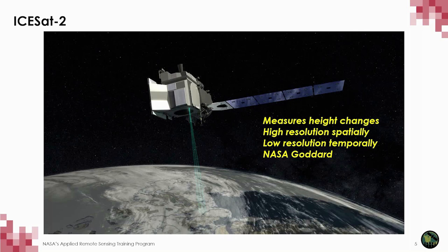ICESat-2 measures height changes, typical of all laser altimetry systems. It has high spatial resolution in the along-track direction but low temporal resolution — every 91 days over the poles it repeats its measurements, which are informative for seasonal changes over ice sheets. In the mid-latitudes, measurements have not been repeating; instead the mission has been trying to fill in and collect as much data as possible. In the near future, repeats in the mid-latitudes will start to allow inferences on change in vegetation heights, but by and large, change measurements are currently taking place in the polar areas.